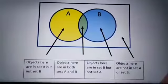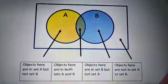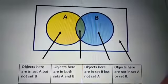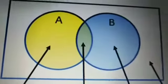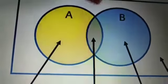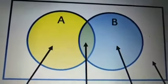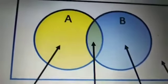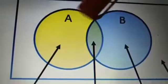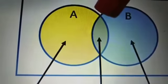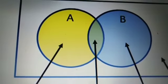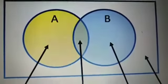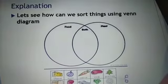This is a simple Venn diagram. Let's study each part in detail. If we have a group of objects and we want to sort them between two groups, A group and B group, any object in the yellow part of circle A belongs to A only. Any object in the blue part of circle B belongs to B only. Any object in the overlap between A and B belongs to both. And any object outside both circles doesn't belong to any of the circles.